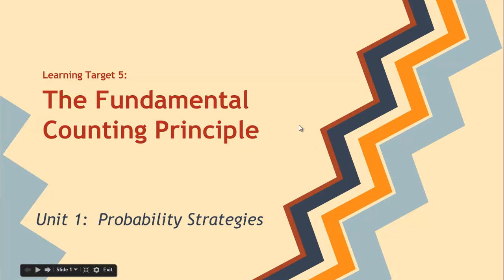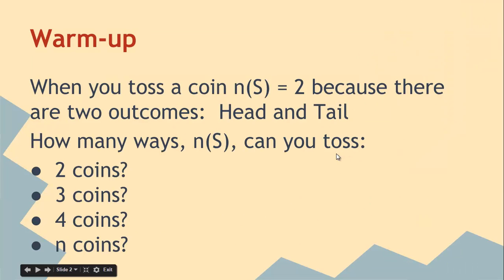Okay, welcome to Learning Target 5. We're going to start talking about the Fundamental Counting Principle. So when you toss a coin, N of S equals two because there are two outcomes, head and tail. So how many ways can you toss two coins, three coins, four coins, or N coins? I want you to think about that for a second.